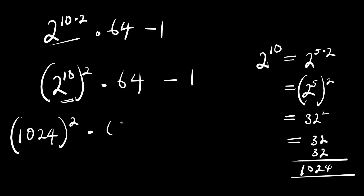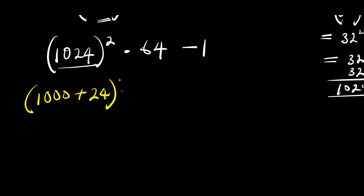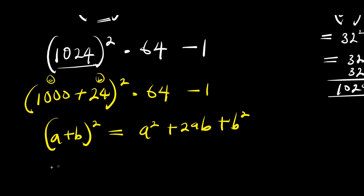So we have 1024 raised to the power of 2, times 64, minus 1. We can express 1024 as 1000 plus 24, all raised to the power of 2, times 64, minus 1. Using the identity: if you have a plus b raised to the power of 2, this equals a squared plus 2ab plus b squared. Here 1000 is our a and 24 is our b.